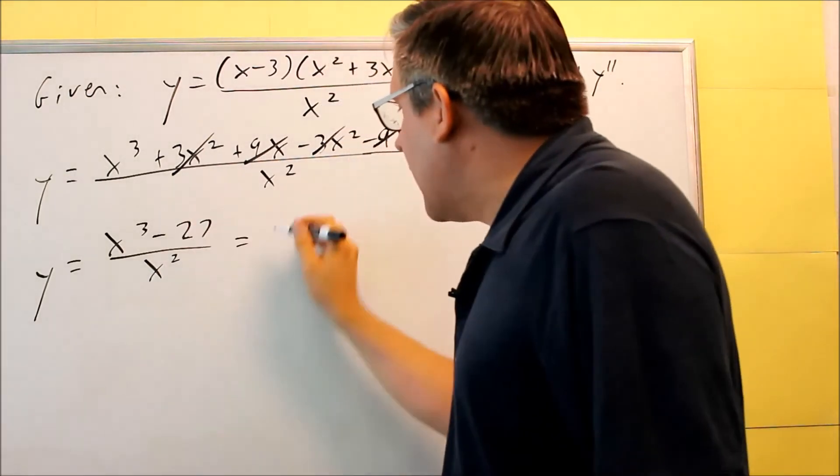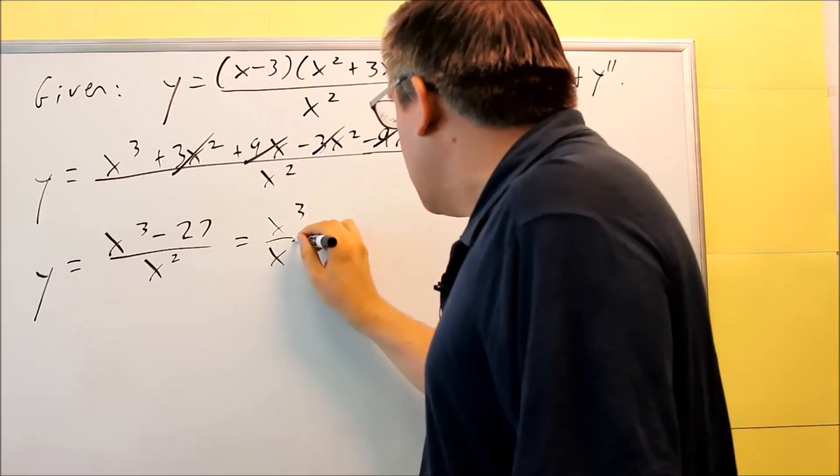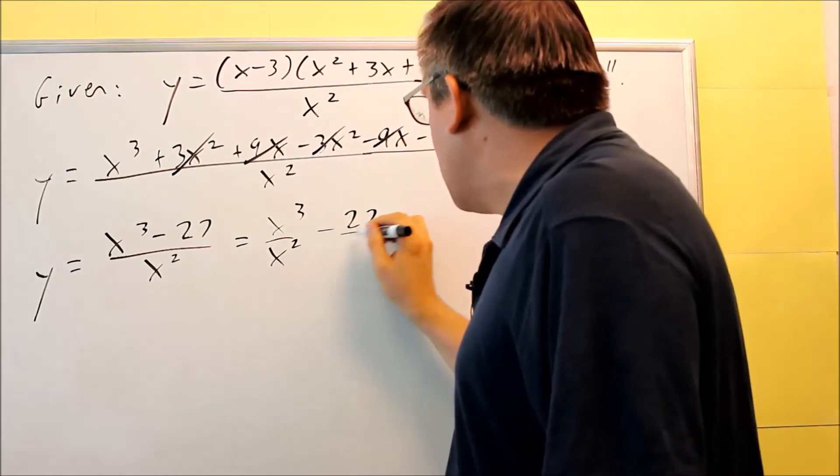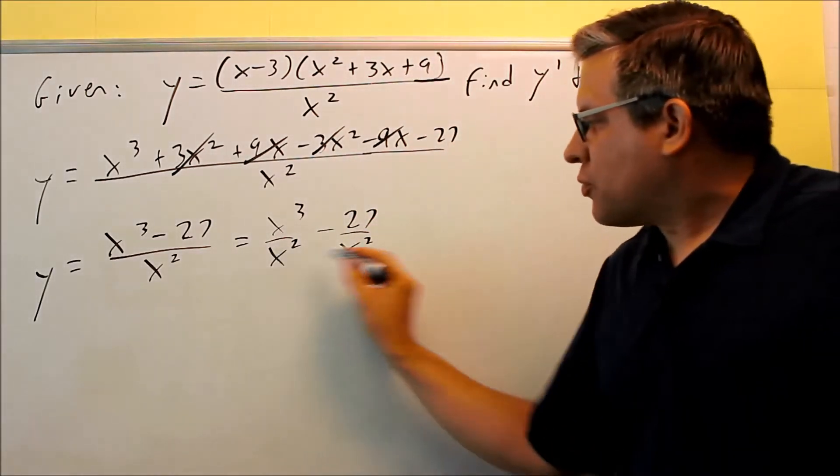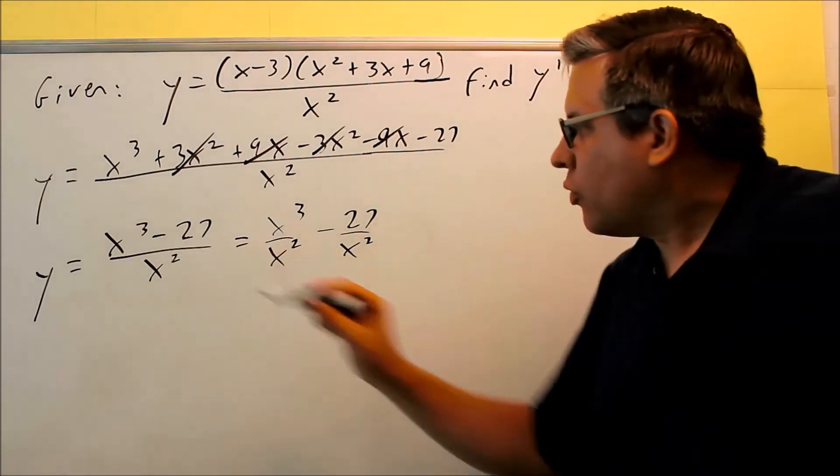So if we divide everything, we get x cubed over x squared, 27 over x squared. So we're splitting it up, and you're allowed to do that as long as there's only one term on the bottom.